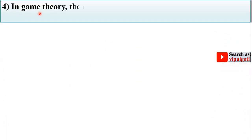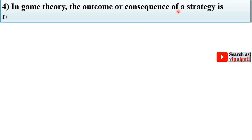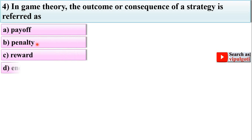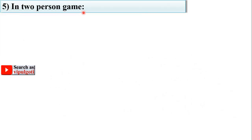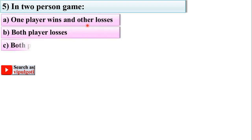Next question: in game theory, the outcome or consequence of a strategy is referred to as — options: payoff, penalty, reward, or end game theory. Looking at this image showing the solution of a game theory problem, these are the outcomes of the game between player A and player B, and that is known as the payoff. So A is the right answer.